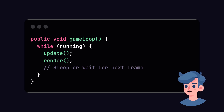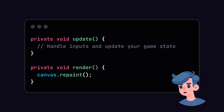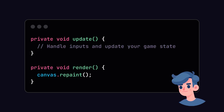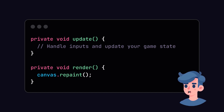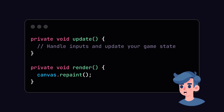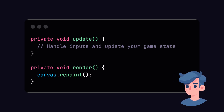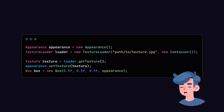In a basic game, this loop handles updating the game state and rendering the frame. In the update method you can check for user inputs and update the game state accordingly. In the render method, we call the canvas to render the current state of our 3D scene. By implementing this structure, your game will respond smoothly to player interactions.